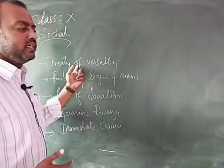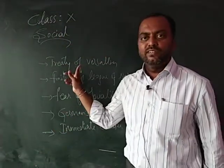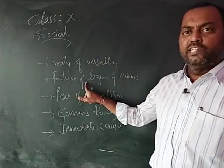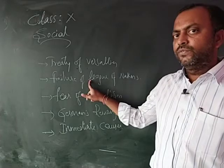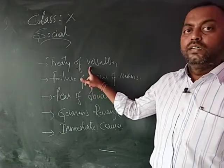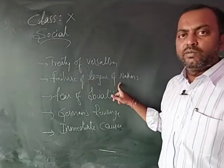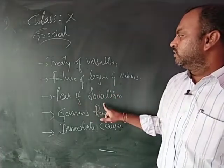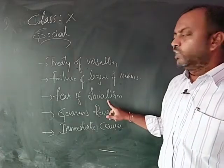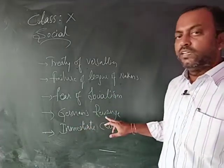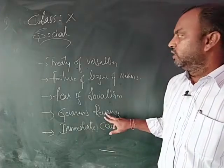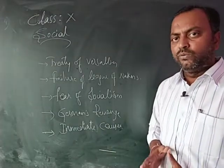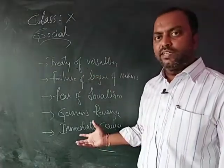The problems like the Treaty of Versailles is one of the reasons for the outbreak of the Second World War. The failure of League of Nations, the institution which got established after the First World War as of Treaty of Versailles agreement, this institution got developed in order to see that no wars break out after. And third reason is there was a fear of socialism and communism among the countries and Germans' revenge. Germany wanted to take a revenge after the First World War and there are certain immediate causes for the outbreak of the Second World War.